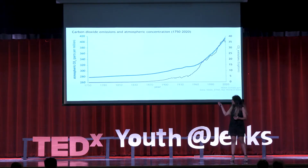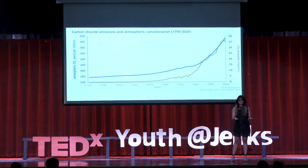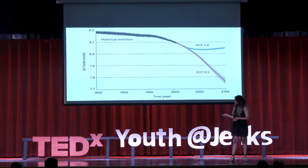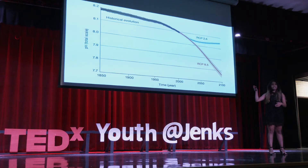Between 1840 and 1870, you can see there is a rise in carbon dioxide emissions, and along with that, the pH of the ocean has reduced. This graph shows past, present, and future predictions of ocean chemistry, and as carbon dioxide rises around 1850, you can see the pH of the ocean has reduced.